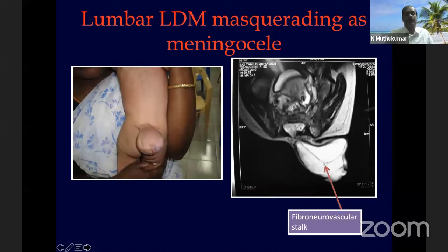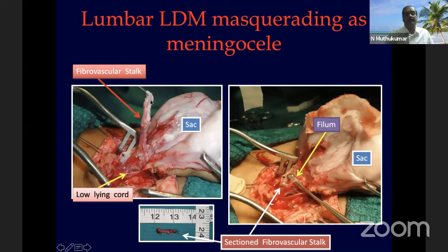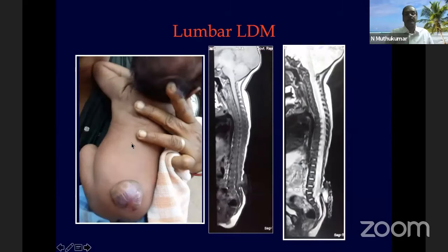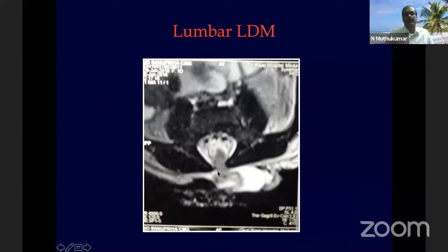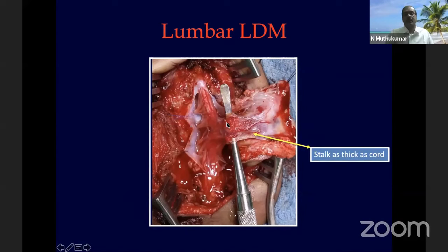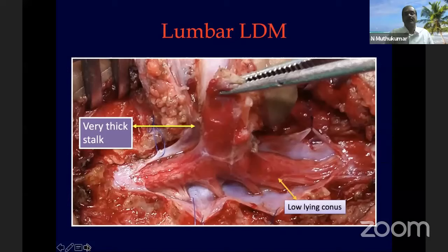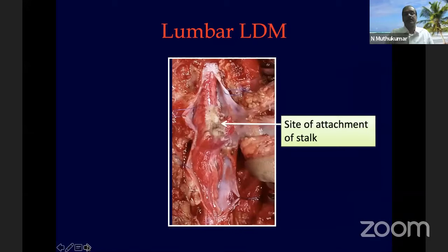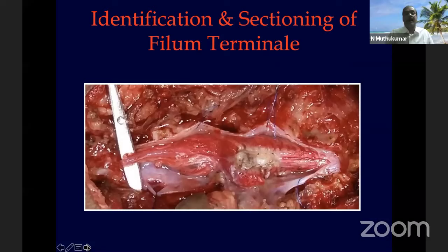A thick fibrovascular stalk was sectioned along with the taut filum. In lumbar LDMs presenting with sphincter disturbance, the stalk and its vascularity are visible intraoperatively after detachment from the sac and sectioning close to the pial surface. On all lumbar LDMs, it is necessary to identify and section the filum terminale as well.